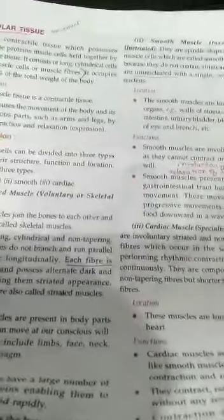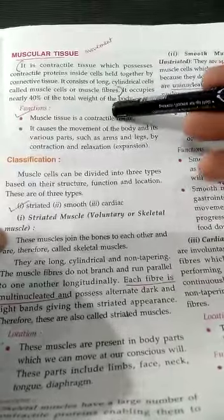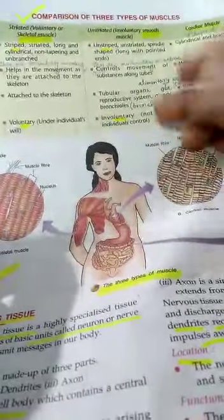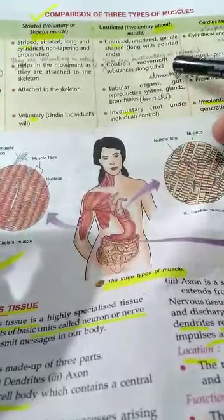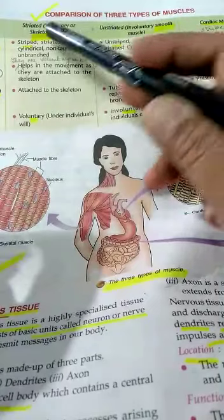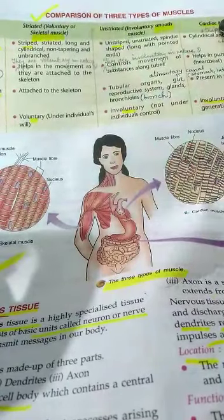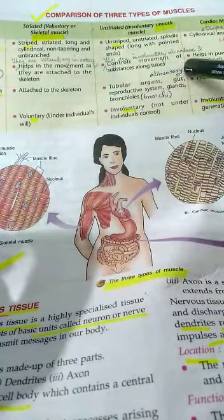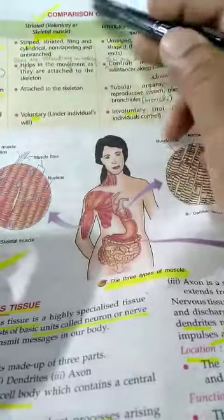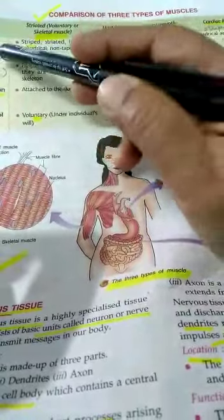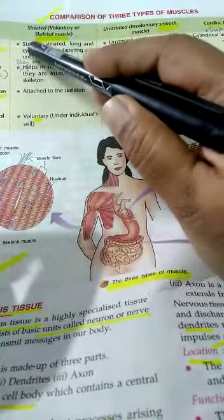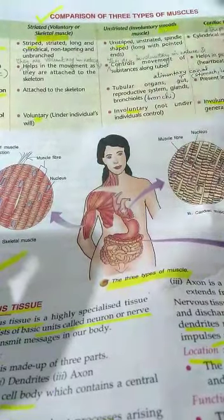The next type of animal tissue is muscular tissue. We will learn it using the comparison table on page number 22. Muscular tissue is classified into three types: skeletal, smooth, and cardiac. Skeletal muscles are striped, smooth muscles are unstriped, and cardiac muscles are striped.